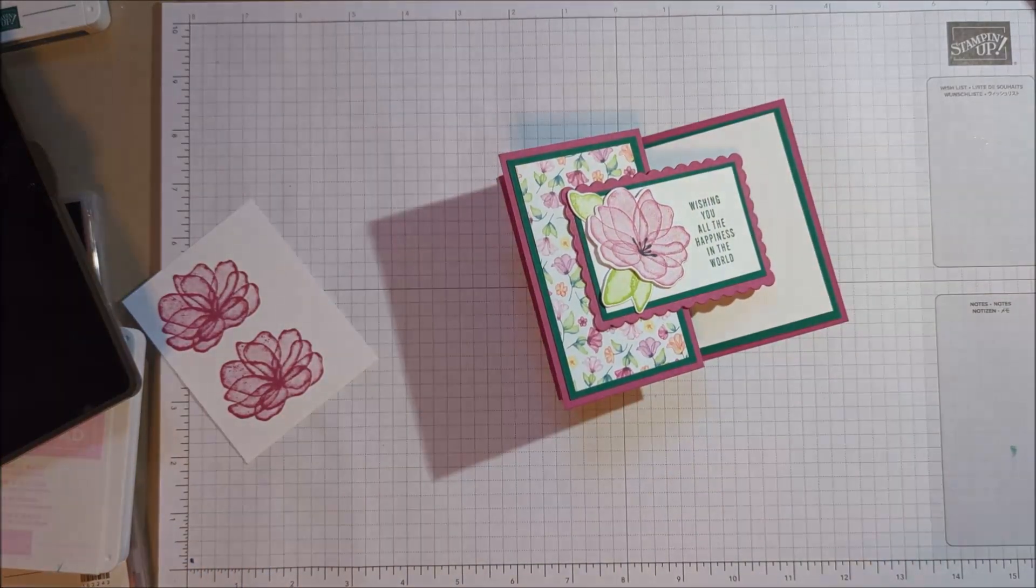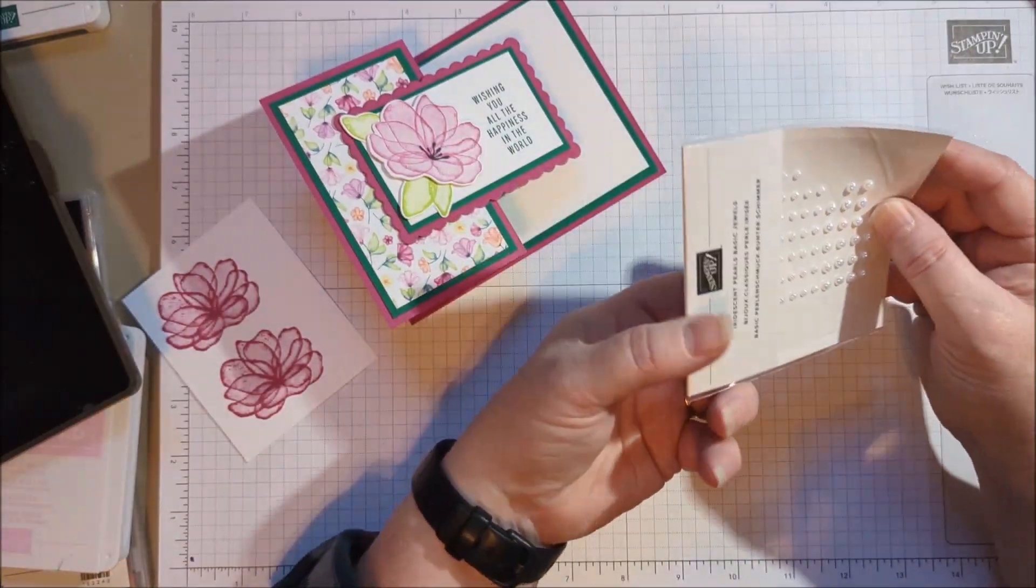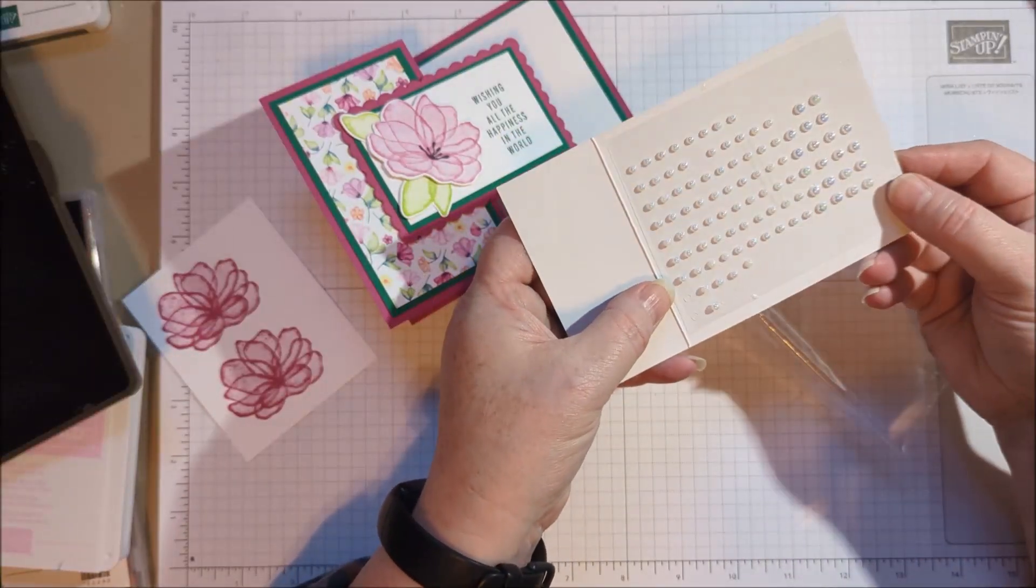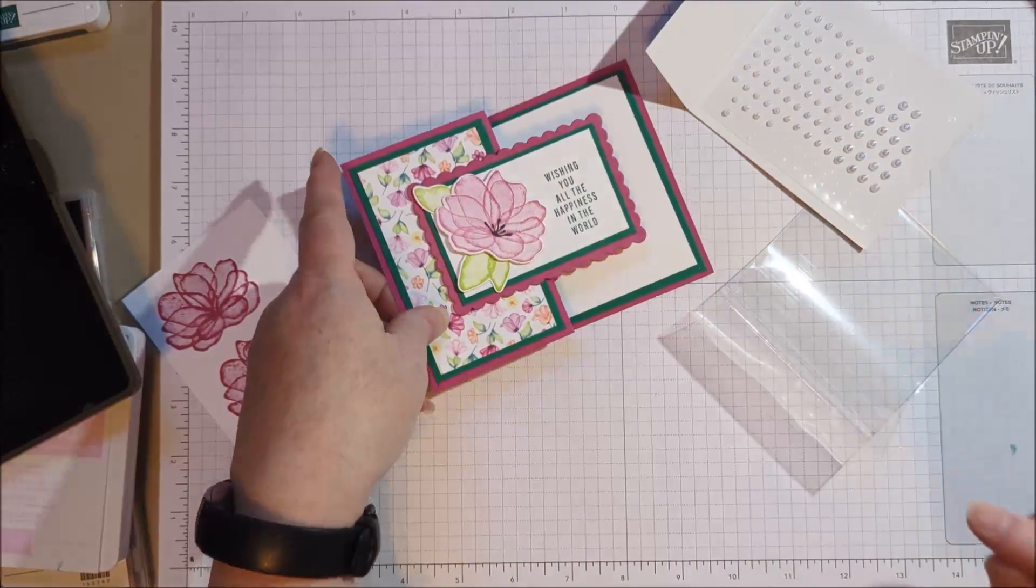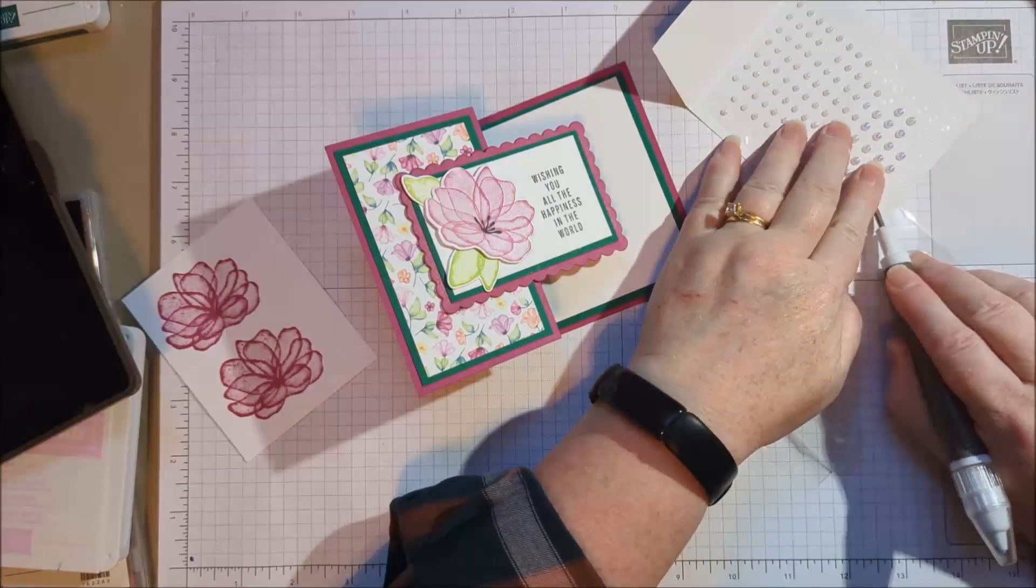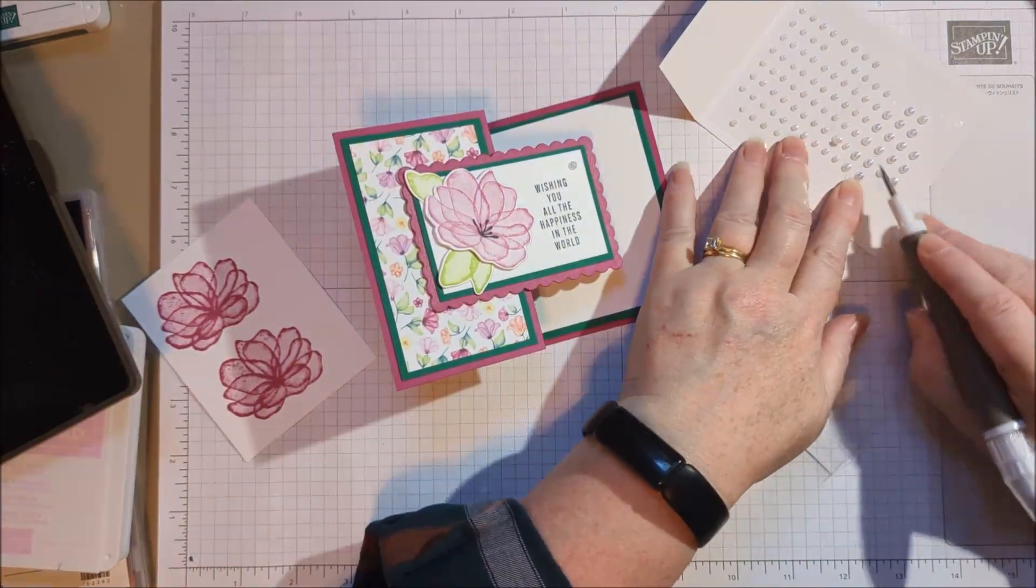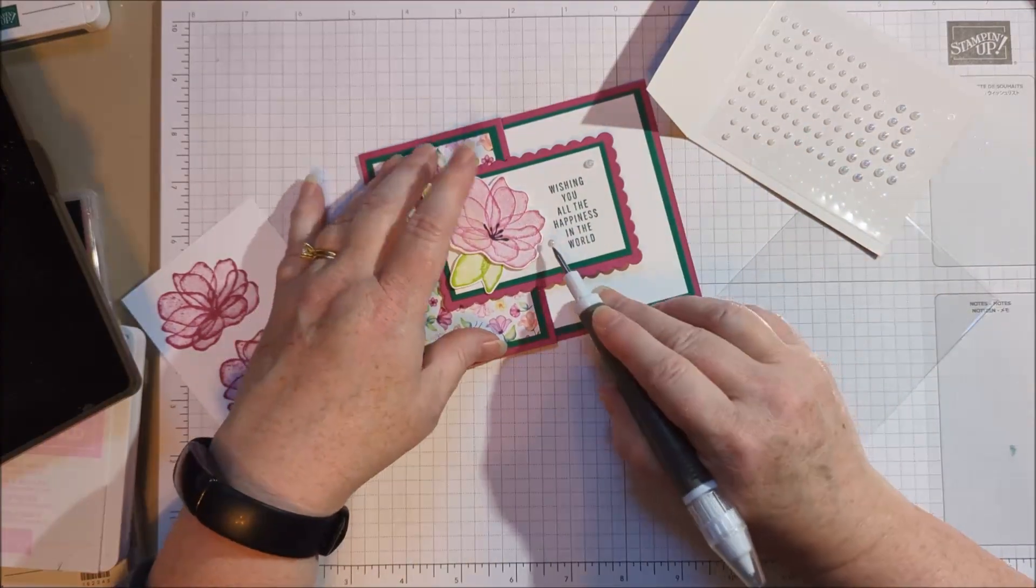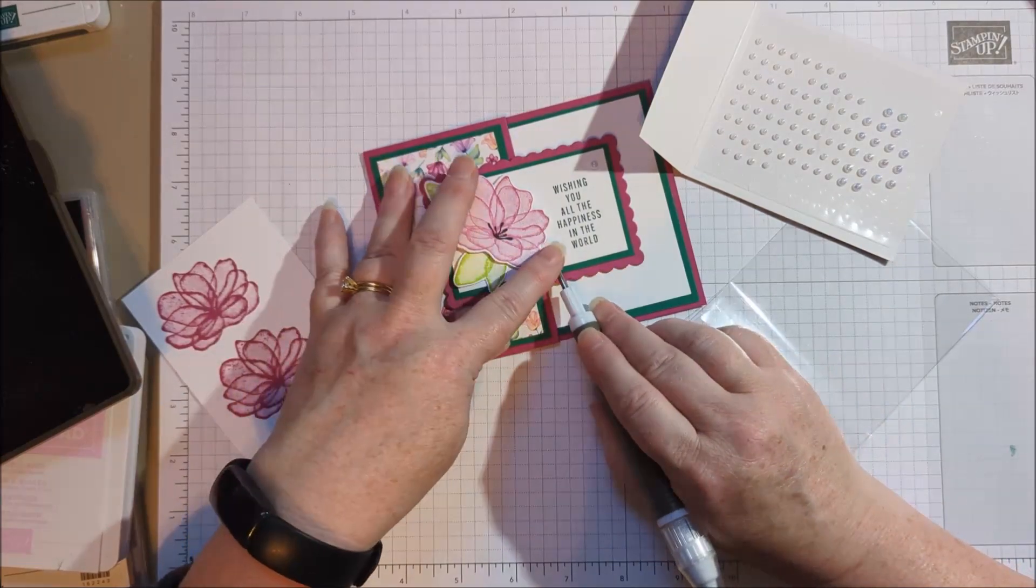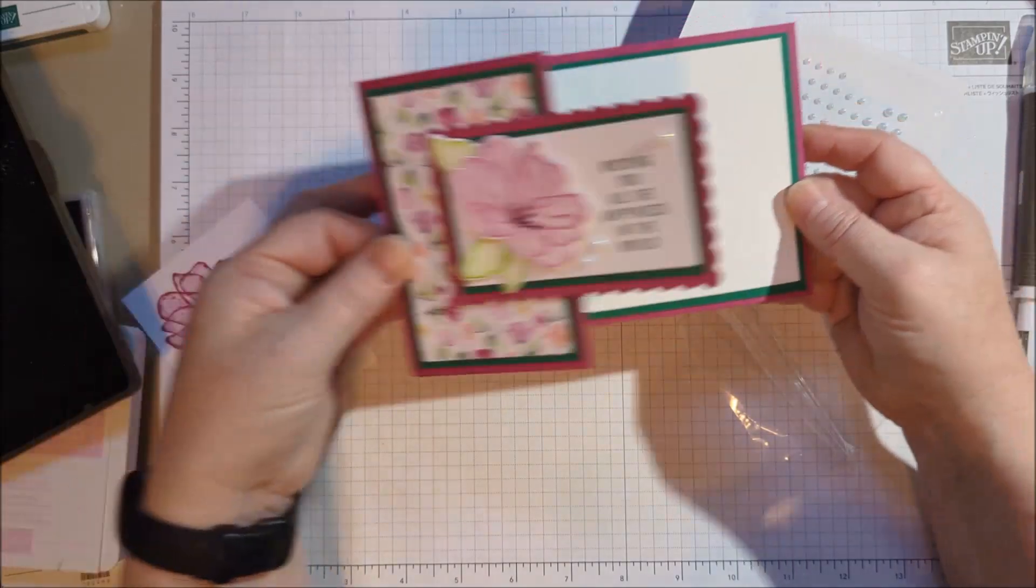And then I also wanted to add a little bit of sparkle with some of these Iridescent Pearl Basic Jewels. I love that the Iridescent really picks up some of that pink. So it's really going to look nice on the Berry Burst. I like to add a few different sizes. I think that's a really pretty card.